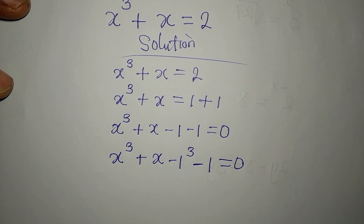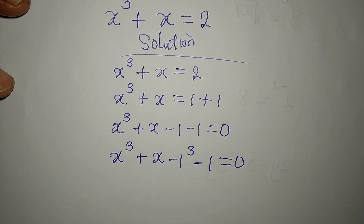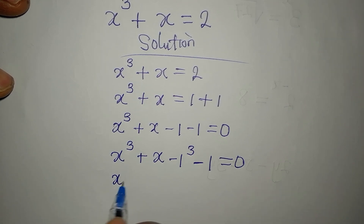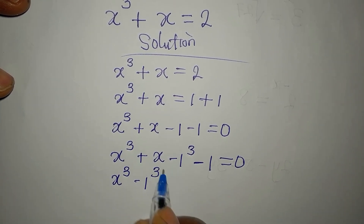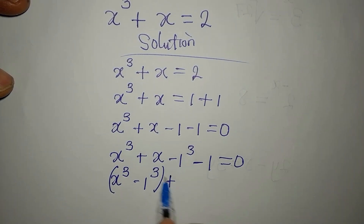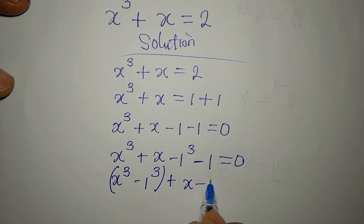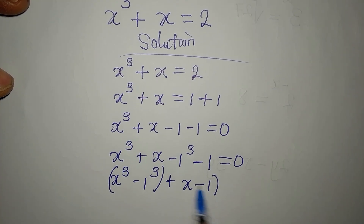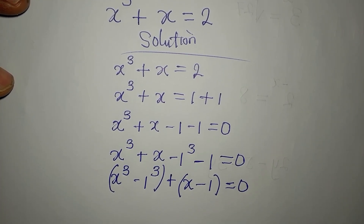We now group the terms: x³ minus 1³ together, plus x minus 1 together, all equal to 0. This grouping is deliberate so we can apply a known factoring identity.